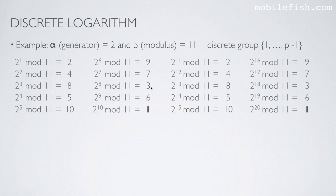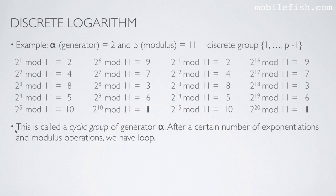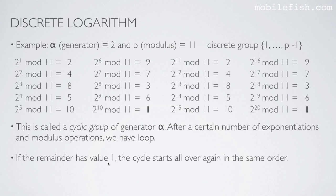So here is 2, 3, 4, 5, 6, 7, 8, 9, 10. The whole discrete group is covered. And if you calculate 2 to the power of 10 mod 11, the result is 1. And after this value, it repeats again. As you can see, the pattern repeats: 2, 4, 8, 5, 9, 7, 3, 6. This is called a cyclic group of generator alpha. After a certain number of exponentiations and modulus operations, we have a loop. If the remainder has value 1, the cycle starts all over again in the same order.